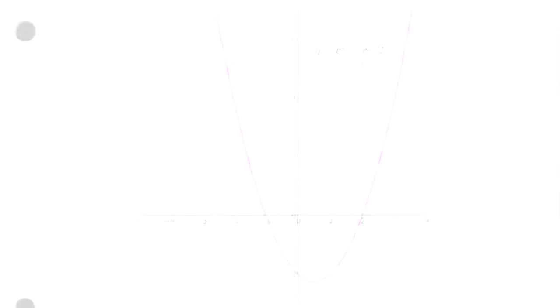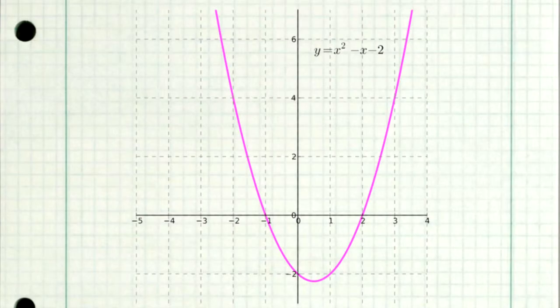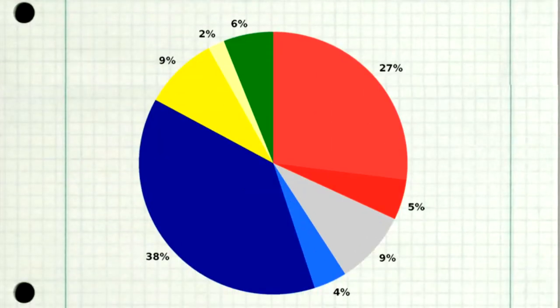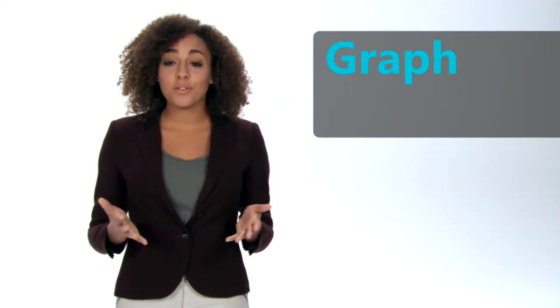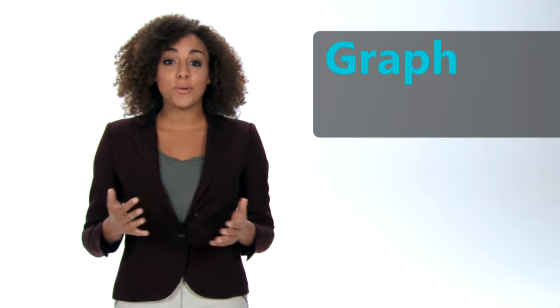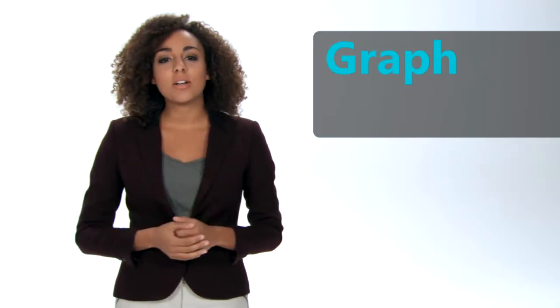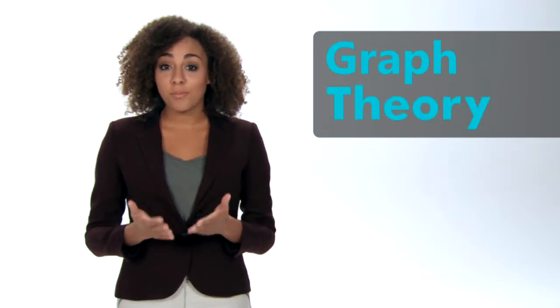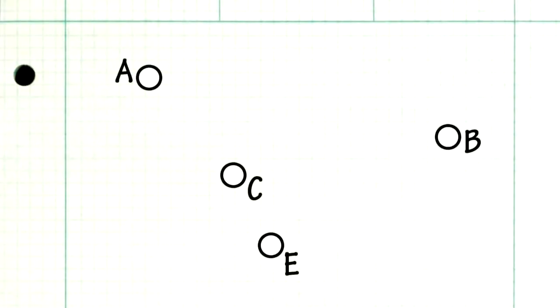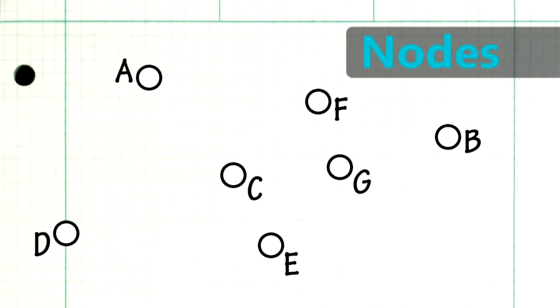When you hear the word graph, you might think of this, or this, or even this. Most people associate the word graph with the graphical representation of a data set or a function. But there's also something called graph theory, where a graph is a mathematical model of a network. In graph theory, a graph represents a set of objects — each object is represented by a letter. These objects are called nodes.